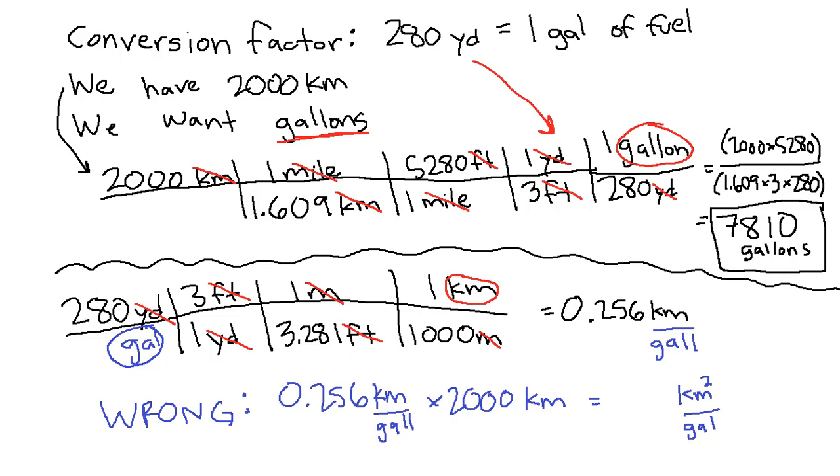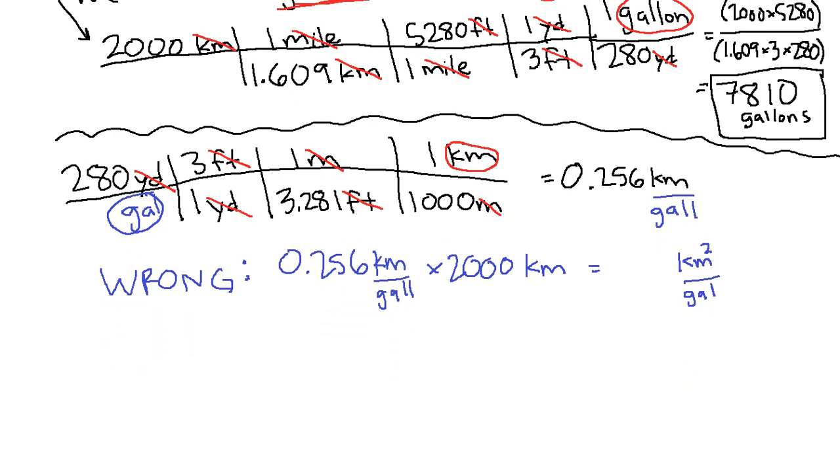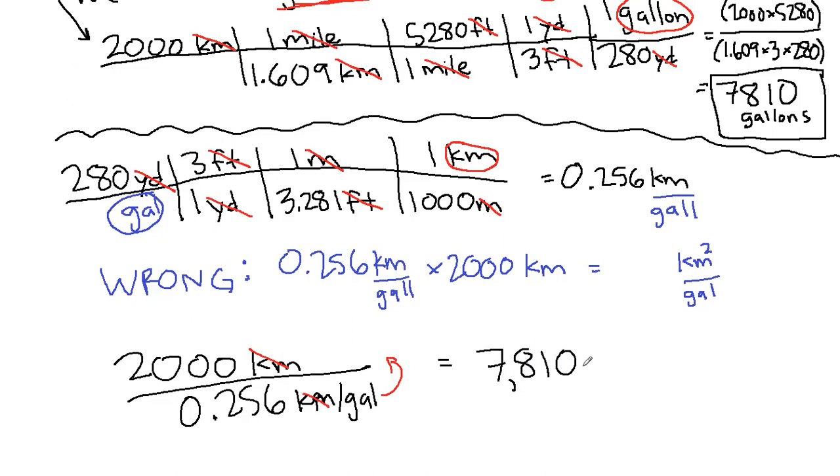And so instead, if we wanted to use this method correctly, instead of doing it this incorrect way, we can use that hard work that we had gotten with this 0.256 kilometers per gallon. We would have to take the 2000 kilometers and divide it by 0.256 kilometers per gallon, because kilometers will now show up on the top and the bottom in equal amounts. The gallons is here on the bottom of the bottom of the fraction, so it will show up on the top in our final answer, and we get 7810 gallons. We will get to the same final answer.